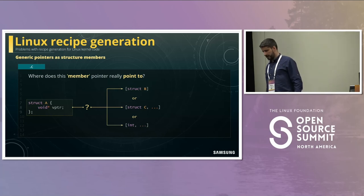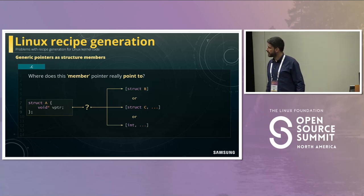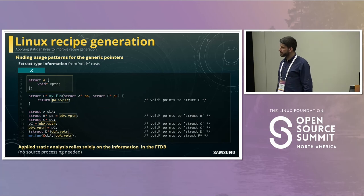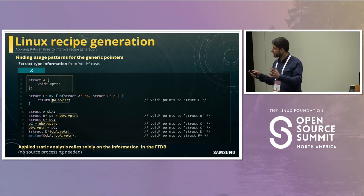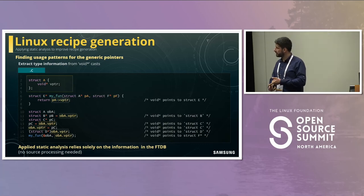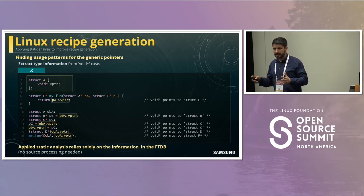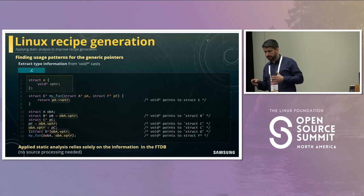Another set of problems is related to the polymorphic nature of structure members. For example, a void pointer member — where does it actually point? Is it a struct B, or maybe an array of integers? We don't know. What we can do is implement some static analysis of the code and look for all the expressions where this void pointer member was actually used — analyzing assignment expressions, initialization, direct casts, passing to functions, return values, etc. This static analysis can give ambiguous results requiring manual intervention, but in many cases it gives you the one proper type.